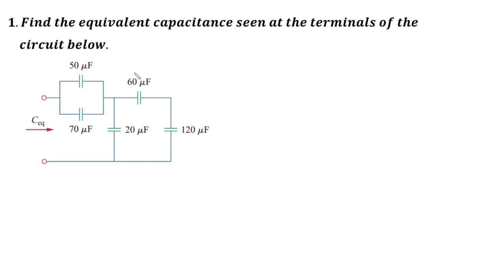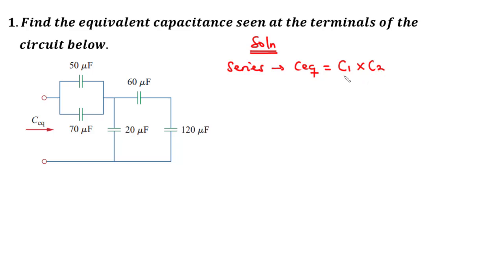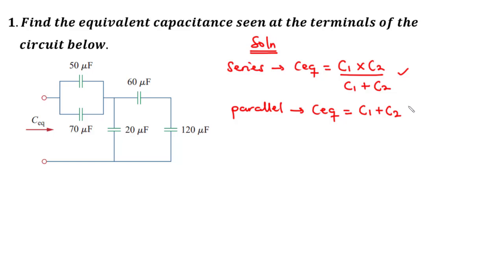The first question asks you to find the equivalent capacitance seen at the terminals of the circuit below. From the previous lesson, for two capacitors in series the equivalent capacitance is given by C1 times C2 divided by C1 plus C2, and for two capacitors in parallel the equivalent capacitance is given by the sum of the two capacitors.